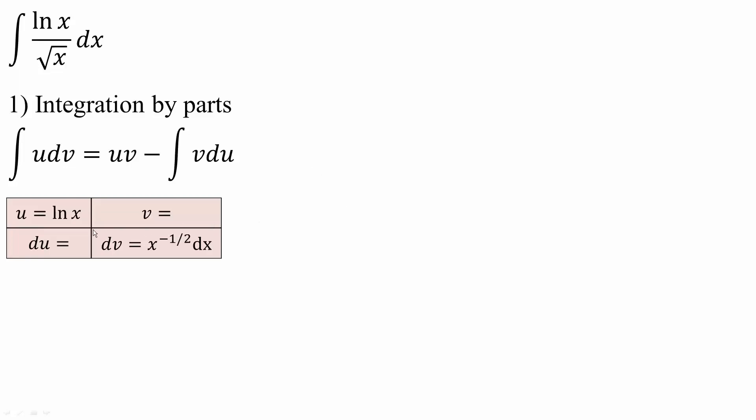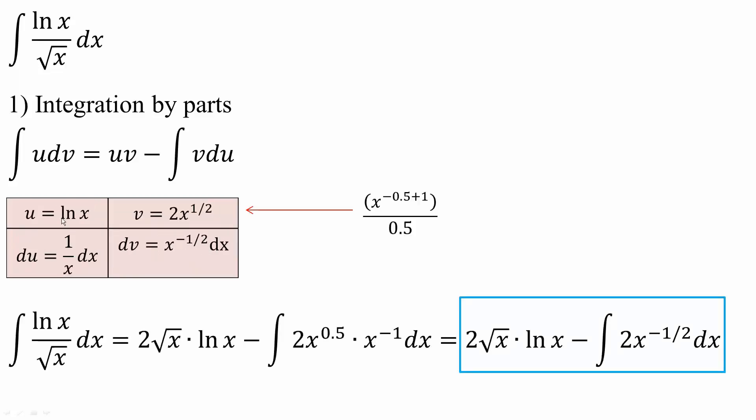I will identify that u will be ln x. I can easily take the derivative of ln x. Likewise, I will say that dv is equal to x raised to negative 1 half dx. I can easily take the integral of this piece. So the derivative of ln x is simple, 1 over x dx.